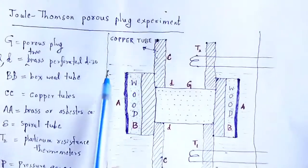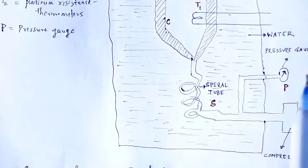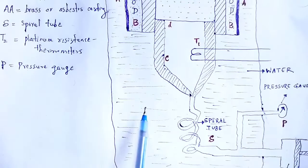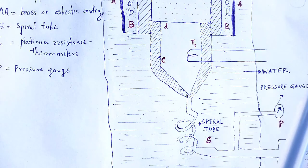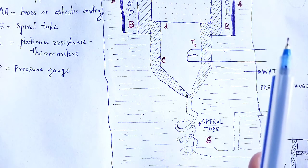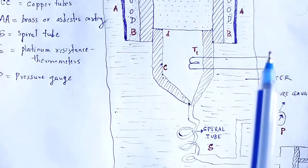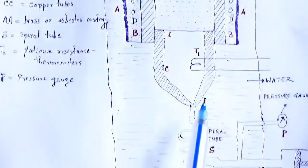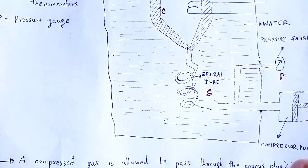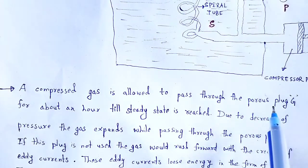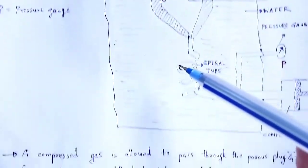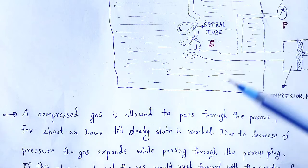The whole apparatus is immersed in a water bath to keep the temperature constant. The experiment is repeated for different pressure differences on the two sides of the porous plug, for different gases over a wide range of temperatures. A compressed gas is allowed to pass through the porous plug G for about one hour, till the steady state is reached.